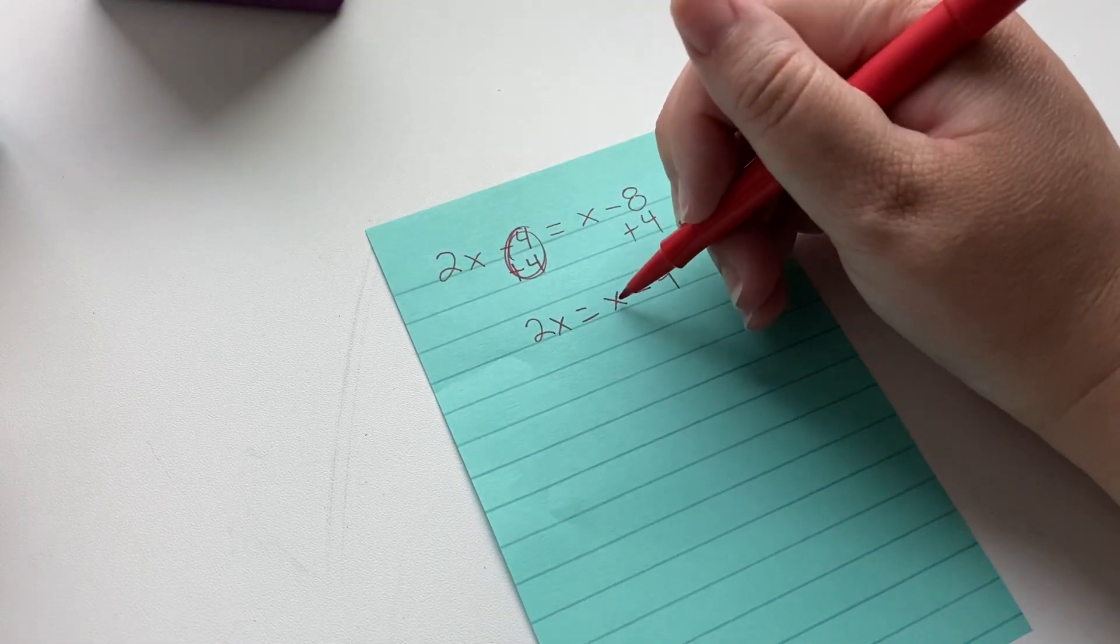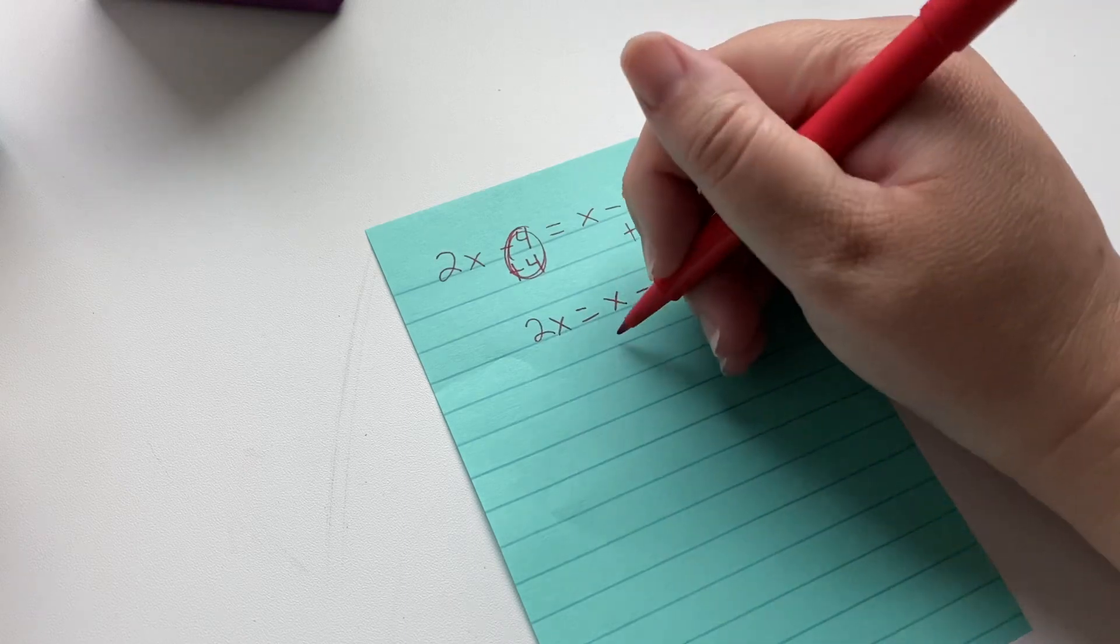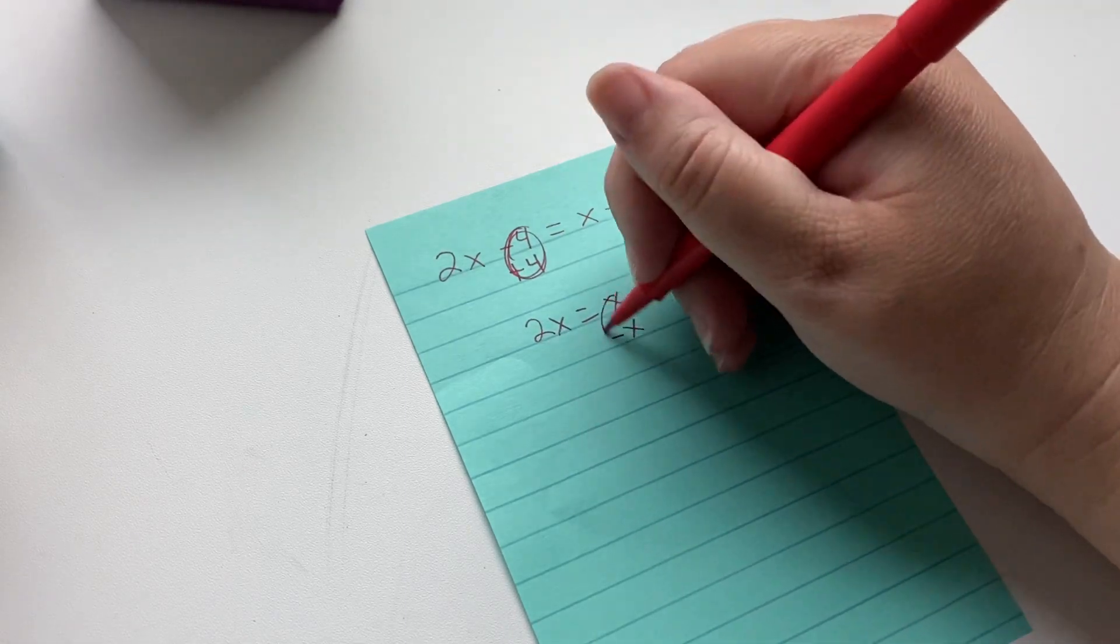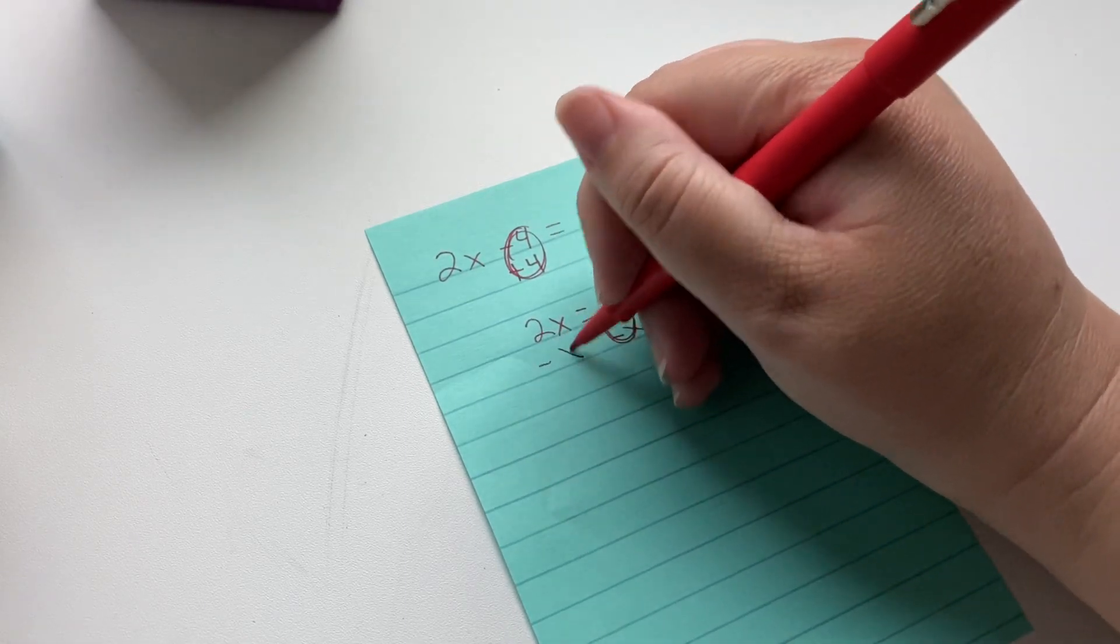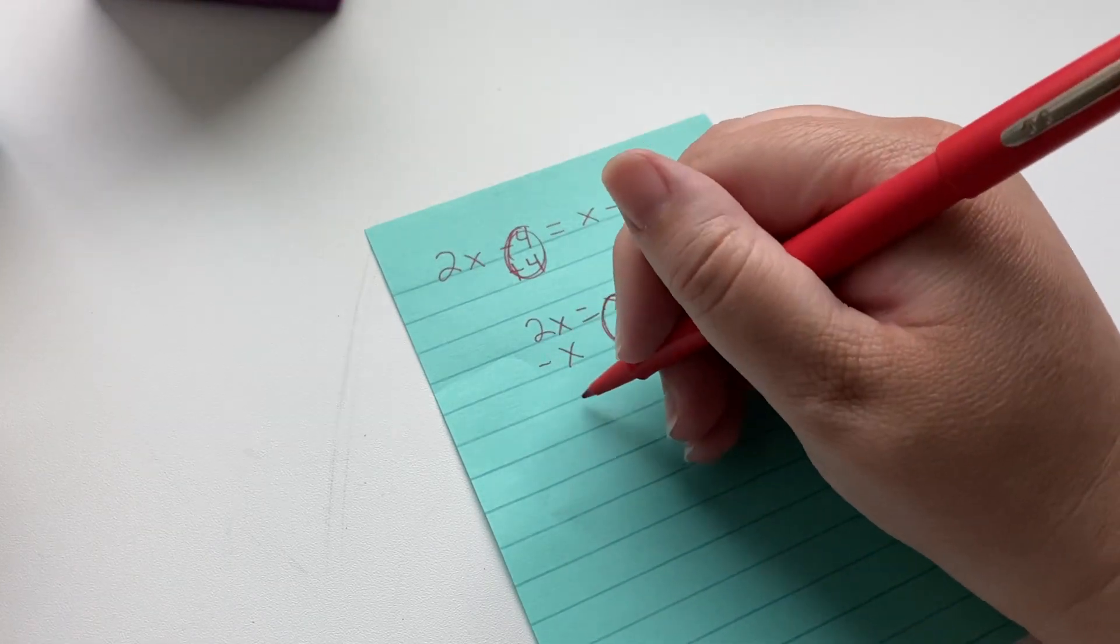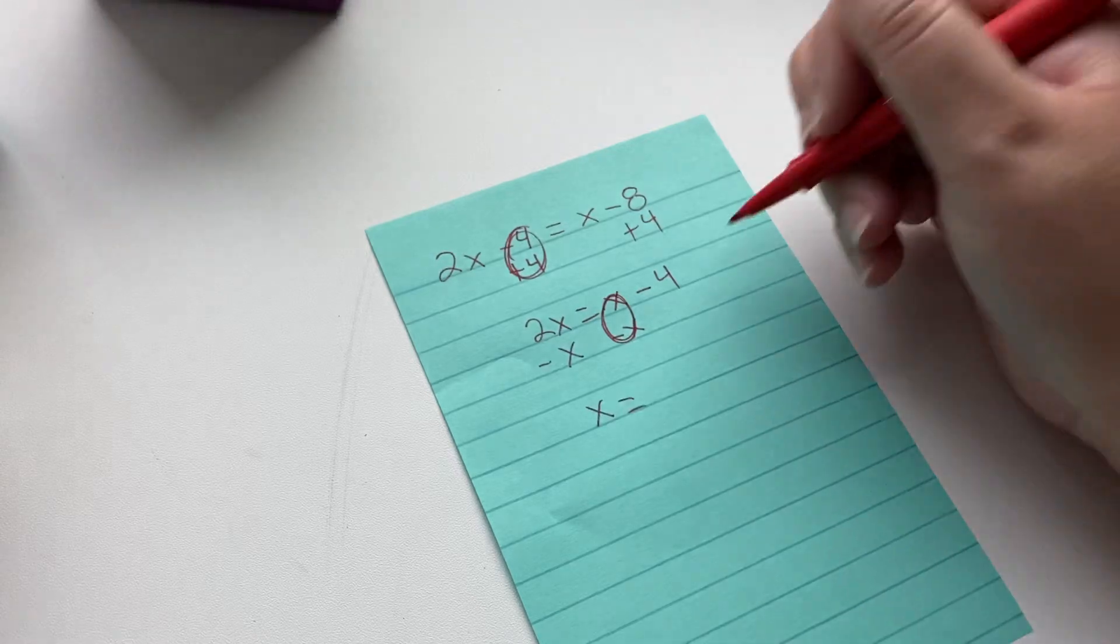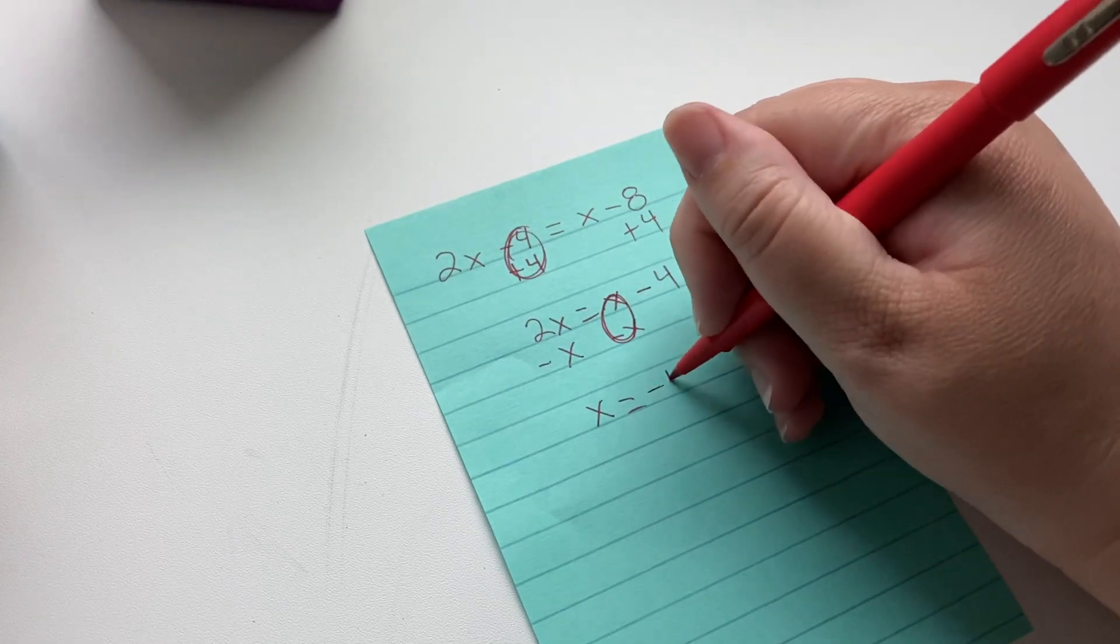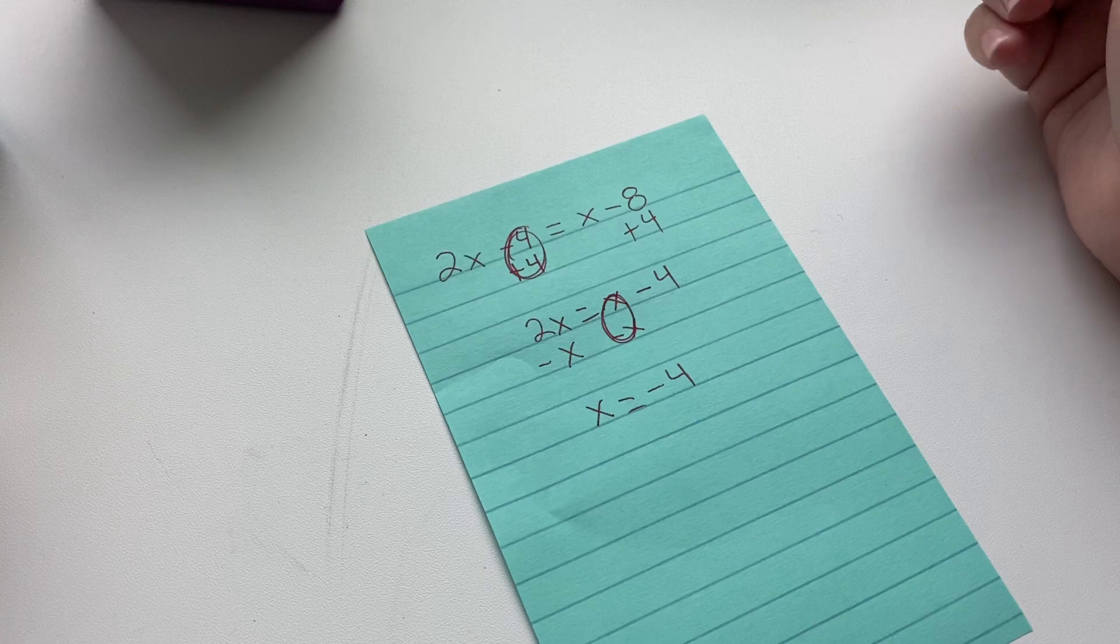Okay, now I need to get rid of this x so that there's no x's over here. So I'm going to subtract x. This becomes zero. Subtract x from that side to keep it balanced. 2 minus 1 is x, and we're left with negative 4 on this side. So that is our answer.